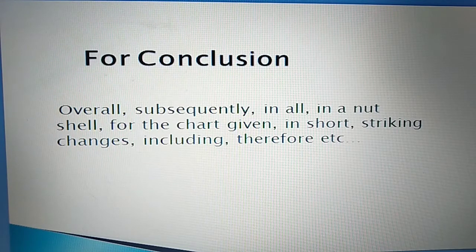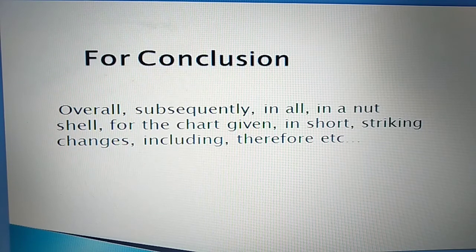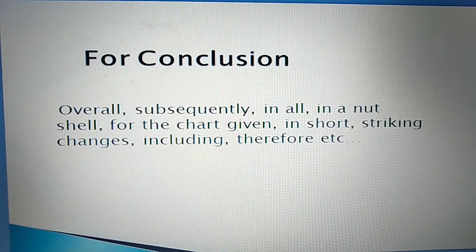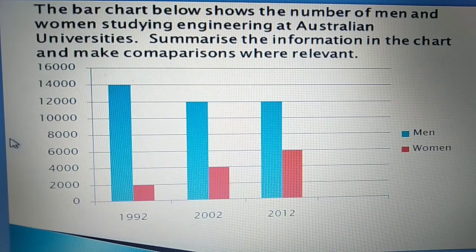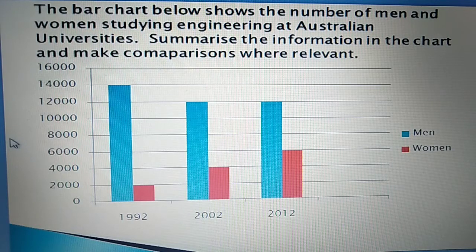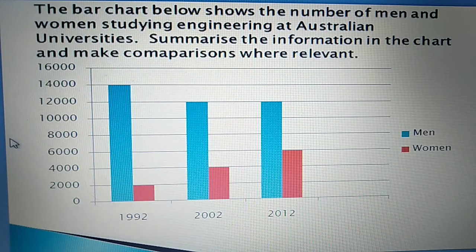These terms might seem a bit strange right now, but when we start writing the analytical paragraph, we will need them a lot and it will become very easy to write. Let's do a question now. The bar chart below shows the number of men and women studying engineering at Australian universities — summarize the information in the chart and make comparisons where relevant.